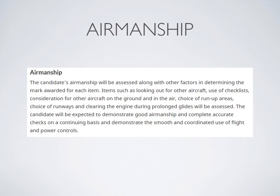Now let's talk about airmanship — the quality asking whether you are really in control of this flight, whether you know what to do and when. Evidence of good airmanship includes things like looking out for other aircraft, using your checklist, consideration for other aircraft on the ground in the taxi area and in the air, your choice of run-up areas, your choice of runways at an uncontrolled airport, and clearing the engine during prolonged glides. Keep in mind that you are being evaluated on flight management and airmanship skills, not only the exercises.